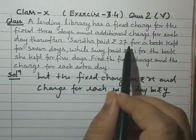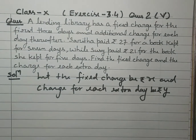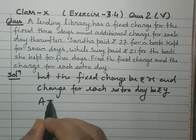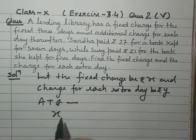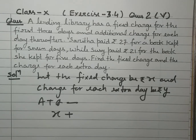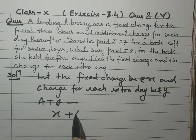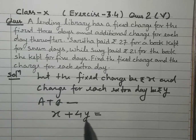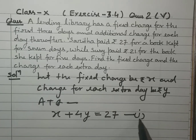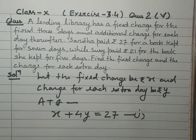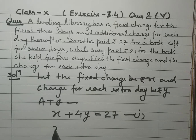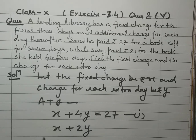Saritha pays 27 rupees and keeps the book for 7 days. According to the question, the fixed charge is X rupees. The fixed charge applies for the first 3 days, and after 3 days the extra charge starts. So for 7 days: X rupees for 3 days, and the remaining 7 minus 3 = 4 days at Y rupees each. So X + 4Y = 27 — this is Equation 1. For Sashi, who keeps the book for 5 days: X for 3 days, plus 5 minus 3 = 2 days at Y rupees each.